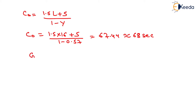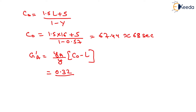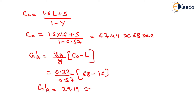Now we determine G'A, the effective green time for road A, which equals (YA divided by Y) multiplied by (C0 minus L). Putting YA as 0.32, Y as 0.57, C0 as 68, and L as 16, we get G'A equal to 29.19, which is approximately 30 seconds.